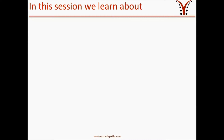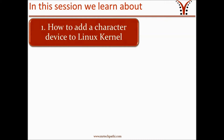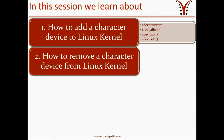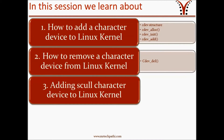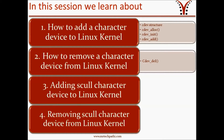In this session, we will learn about four topics. The first topic is how to add a character device to the Linux kernel. Under this topic, we will discuss about the cdev structure, cdev_alloc function, cdev_init function, and cdev_add function. The second topic is how to remove a character device from the Linux kernel, covering cdev_del. The third topic is adding our skull character device to the Linux kernel, and the fourth topic is removing the skull character device from the Linux kernel.